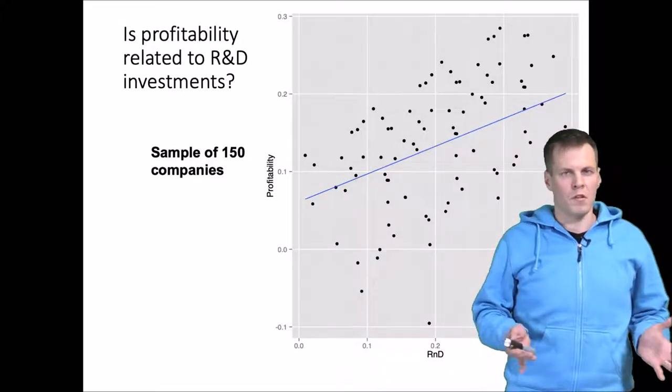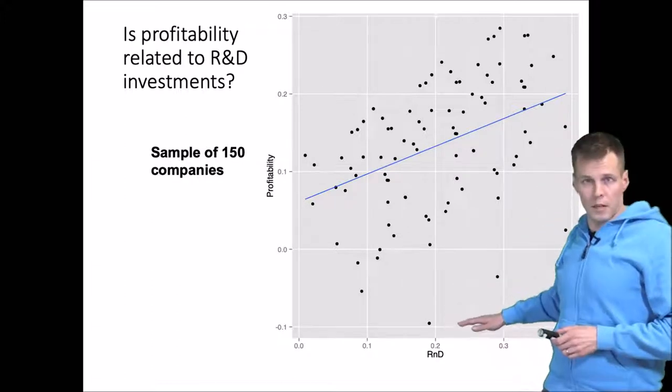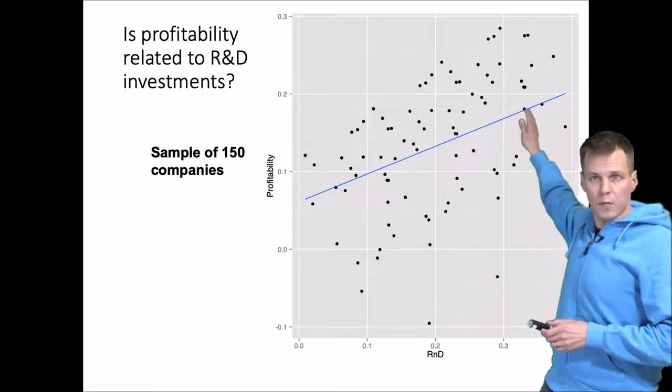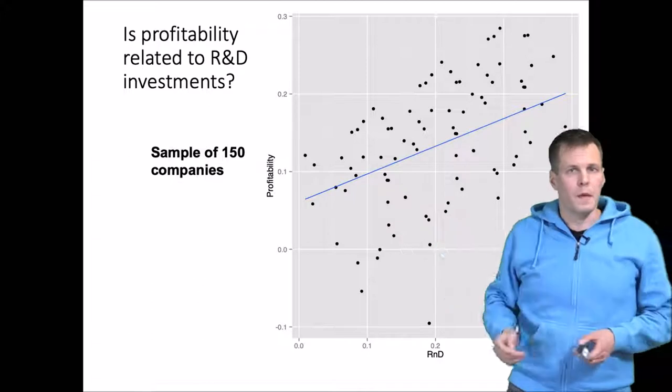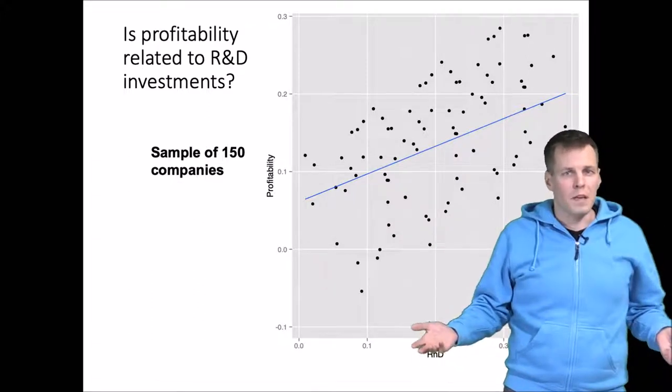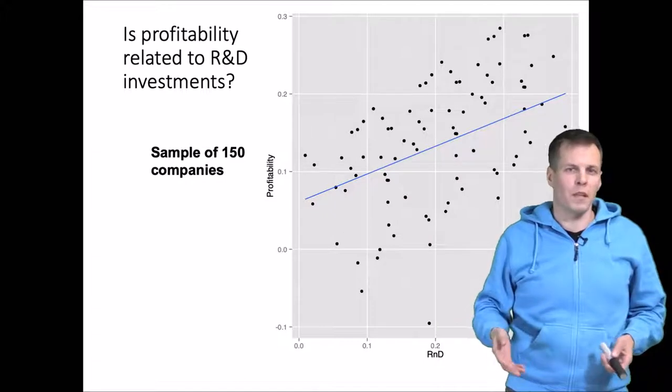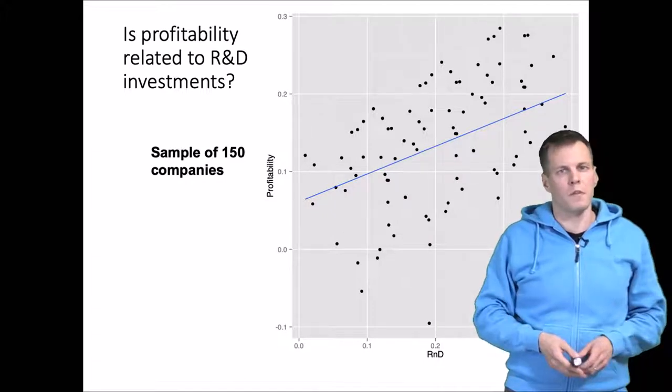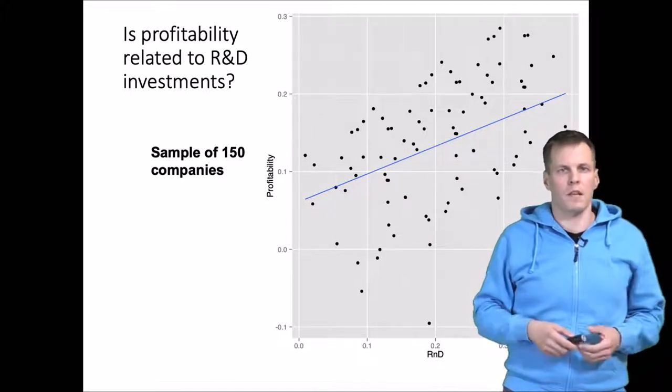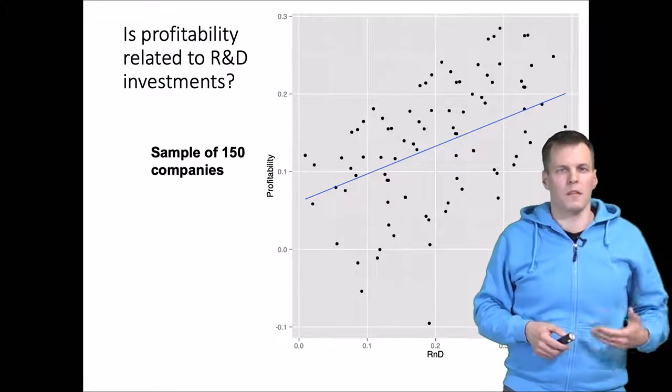We run a regression analysis and we can see that R&D here is clearly positively related to profitability. So the question is, is that really so? Just based on this figure, it would seem that there is a positive relationship, but if the data are actually multi-level, the answer may not be as clear.